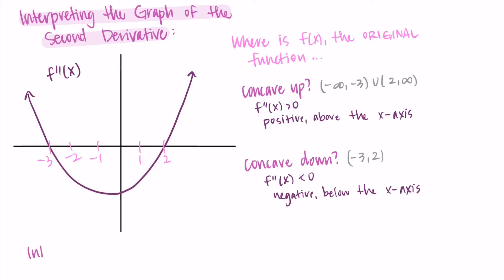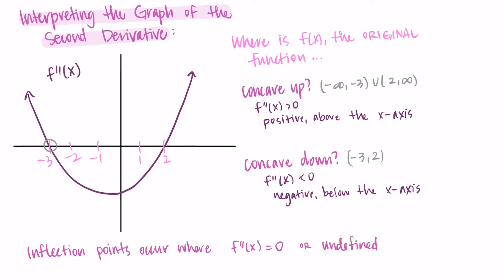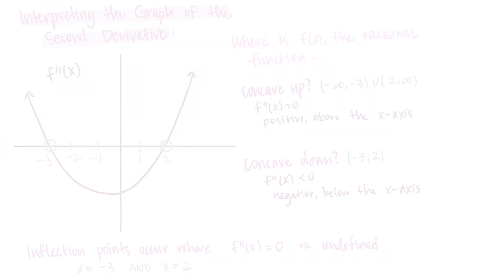We can label the inflection points as well. Inflection points occur where the second derivative is zero or undefined. Here we just have locations where it's equal to zero — meaning the outputs of the graph are zero — so ours are at x equals negative 3 and x equals 2. Thanks so much for watching. Hopefully this helped you understand how to interpret the graph of the derivative for concavity and inflection points, and I will talk to you in the next one.